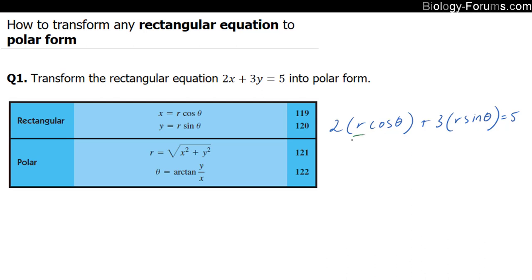And if you factor out the r, you end up with r times 2 cosine theta plus 3 sine theta, and that is equal to 5.